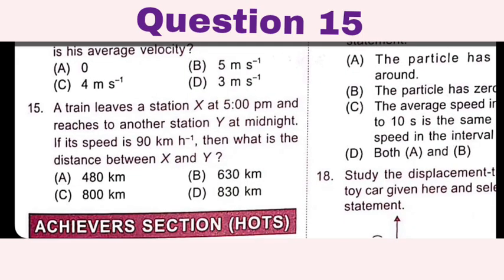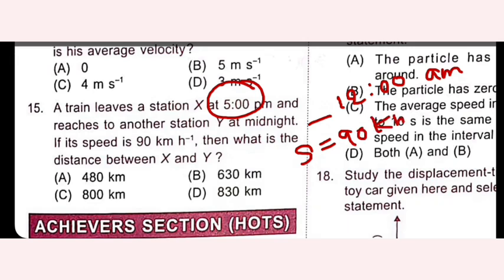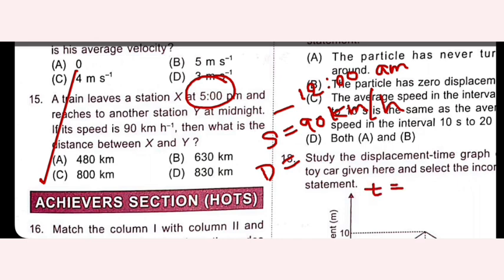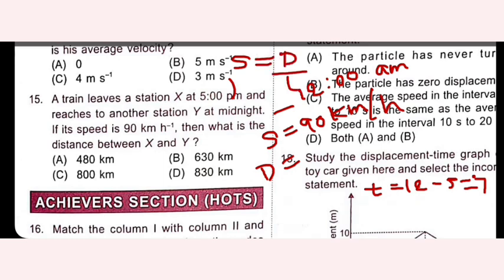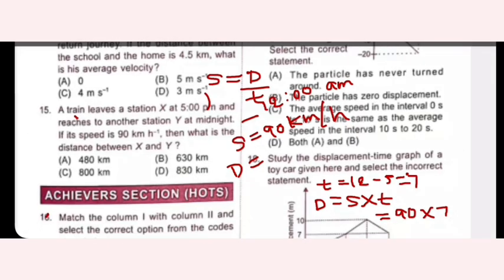A train leaves station X at 5 pm and reaches station Y at midnight (12 am). The speed is 90 km/h. Time taken = 12 minus 5 = 7 hours. Distance = speed × time = 90 × 7 = 630 km. Option B is the right answer.